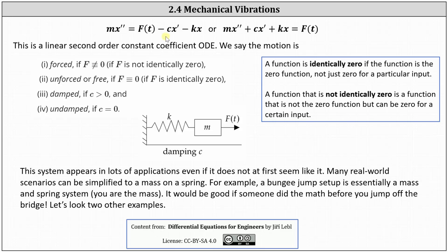The motion modeled by the differential equation is forced if F is not identically zero, meaning it's not always the zero function. The motion is unforced or free if F is identically zero, meaning F is always the zero function. The motion is damped if c is greater than zero, and the motion is undamped if c equals zero.